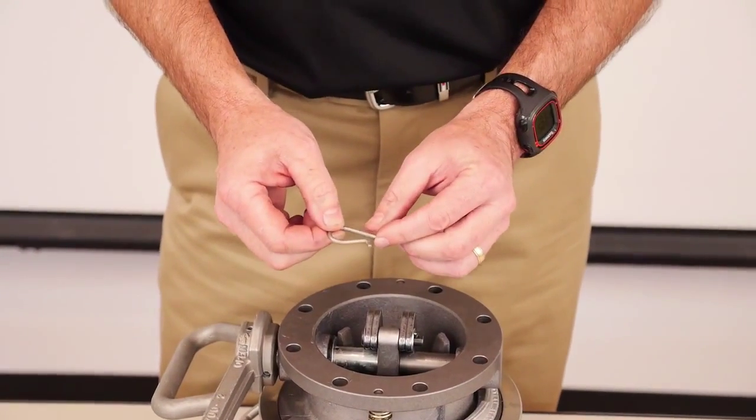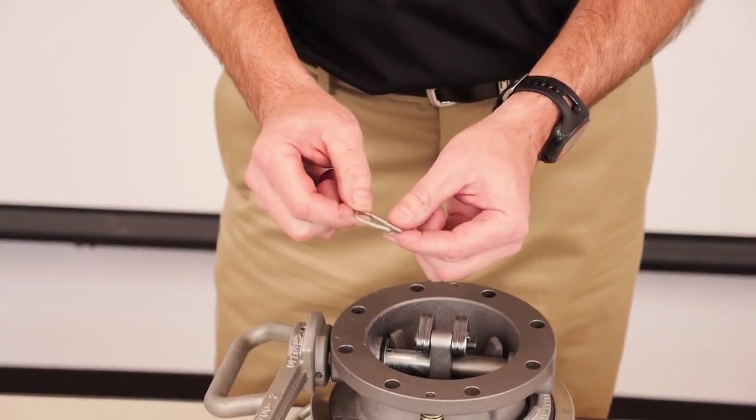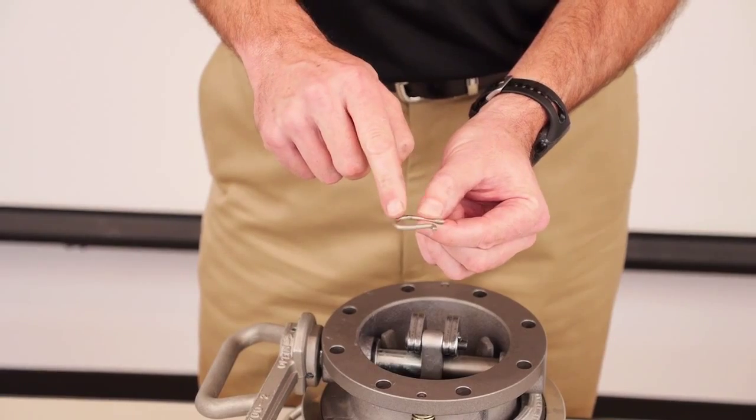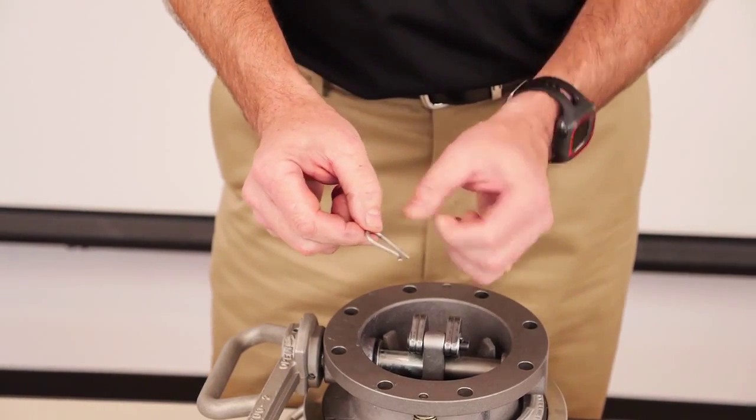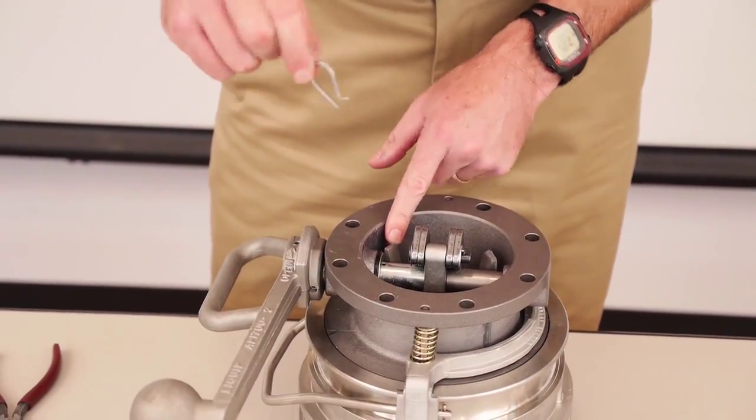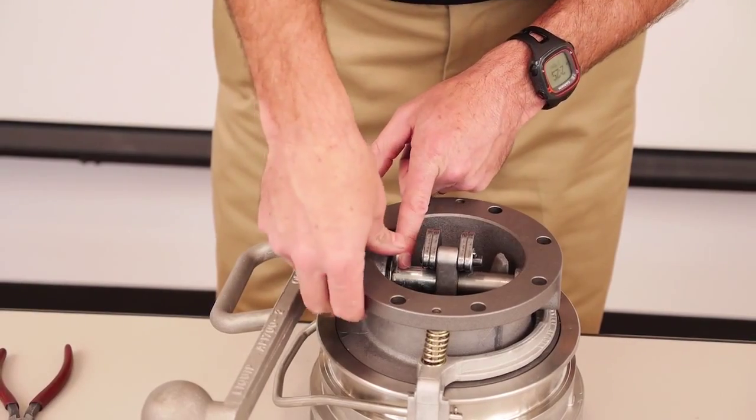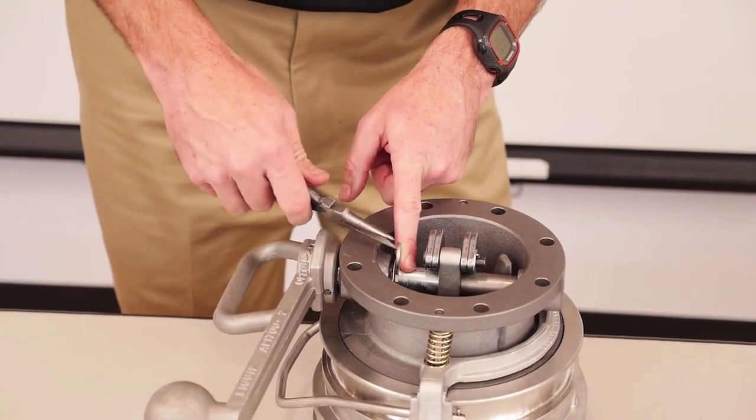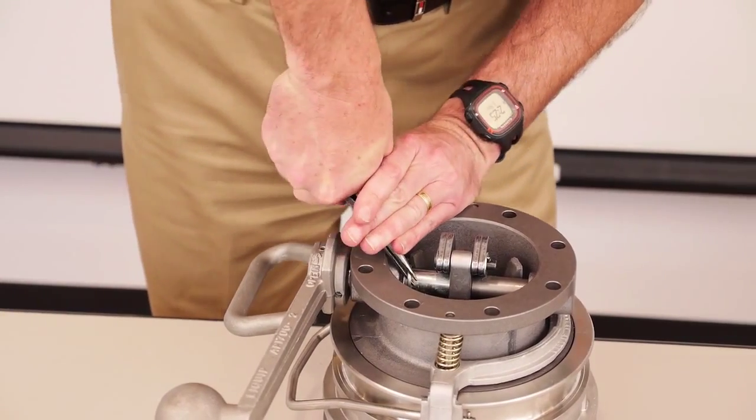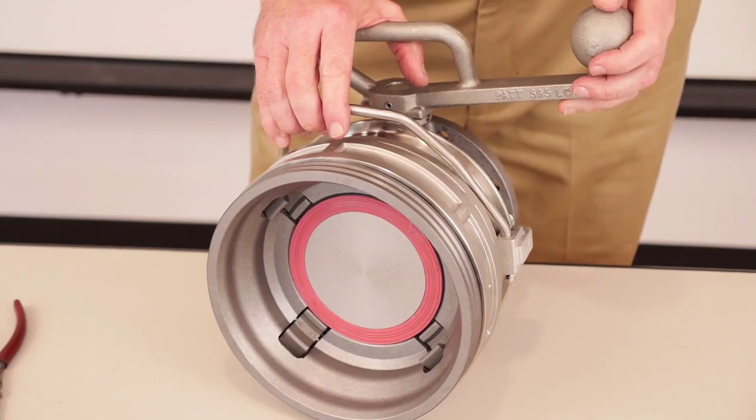Now that the coupler is closed, we can then install the R-clip. An important note with the R-clip is to make sure that the rounded edge is inserted facing away from the poppet leg. So it's going to go in in this orientation. So we just put it in the hole in the shaft with your needle nose pliers. Press it into place. So this coupler is now ready to go back into service.